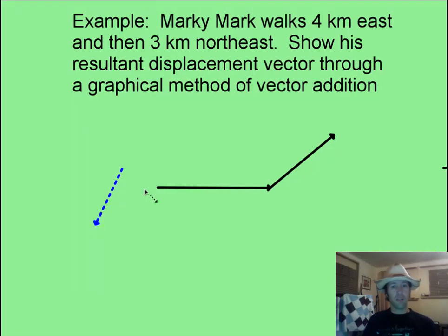Now, for my resultant vector, I go from where I started from, and I draw a vector to the end, and the resultant vector is that he went however many kilometers the length of this would represent in a somewhat northeasterly fashion.